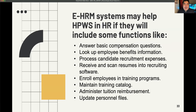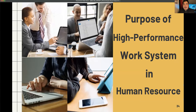An eHRM system may help HPWS in HR if it includes functions such as: answering basic compensation questions, looking up employee benefit information, processing candidate recruitment expenses, receiving and scanning resumes into recruiting software, enrolling employees in training programs, maintaining a training catalog, administering tuition reimbursement, and updating personal files.